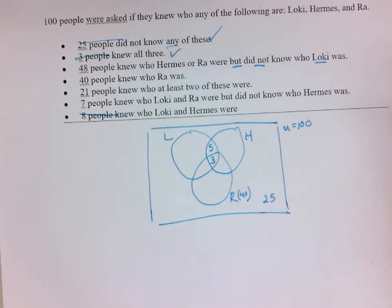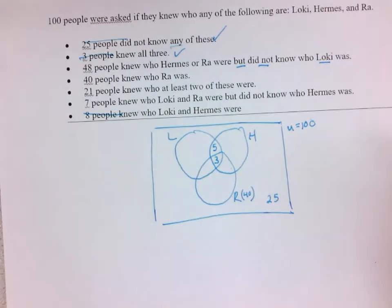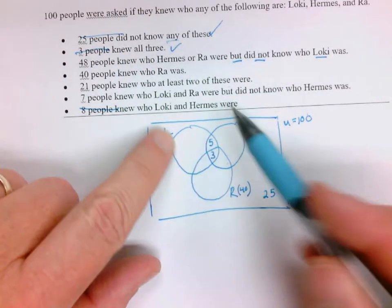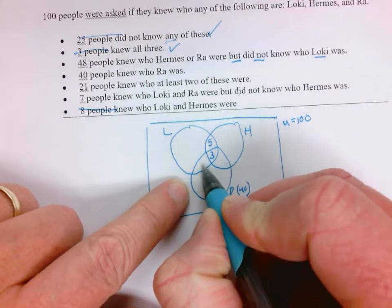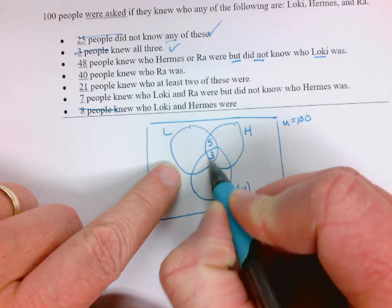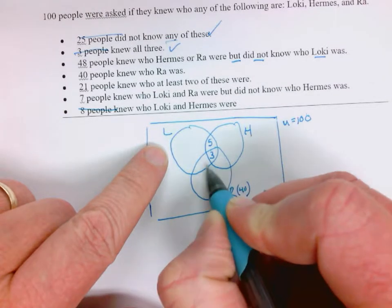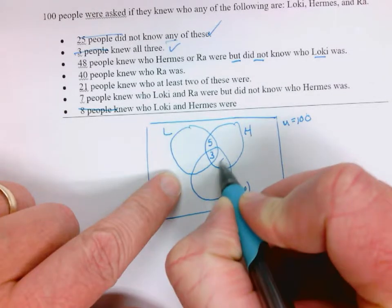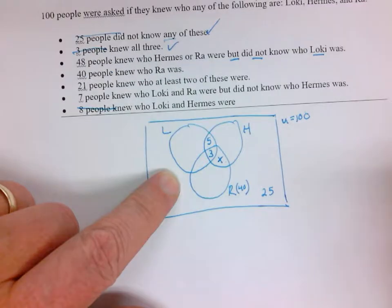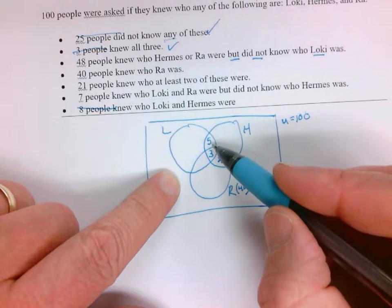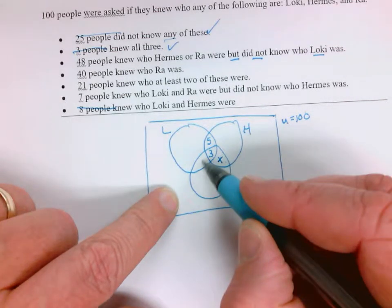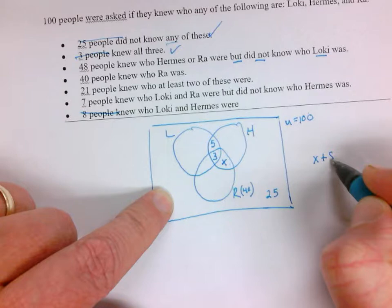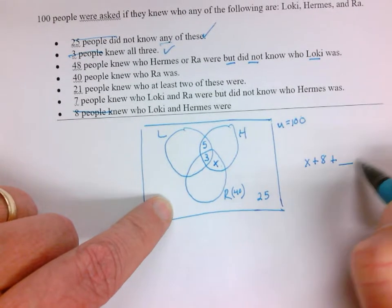21 people knew at least two of these. So at least two is these four categories in the middle. If I put an X right here, then X plus 8 plus what is ever here have to add up to 21. Because X plus 3 plus 5 plus that have to equal 21.